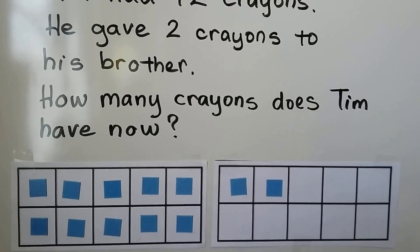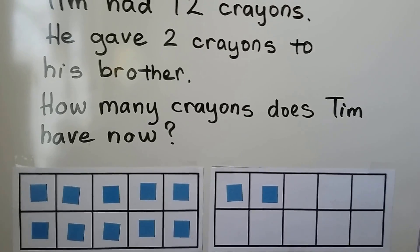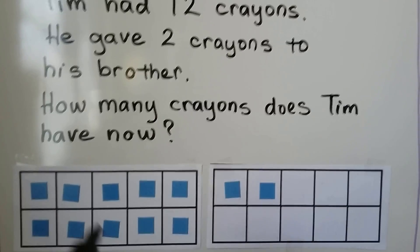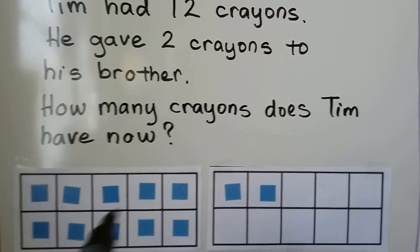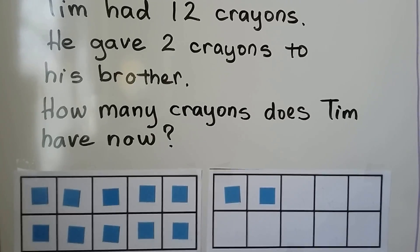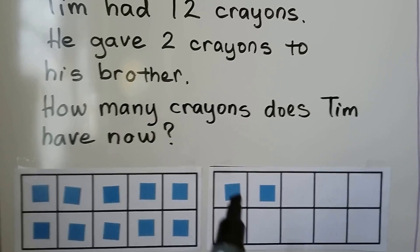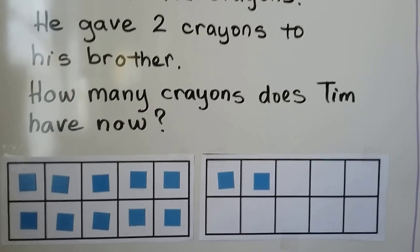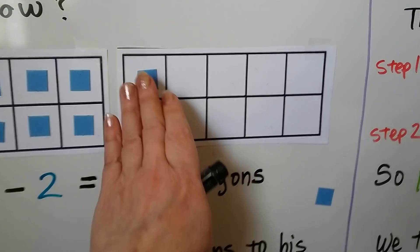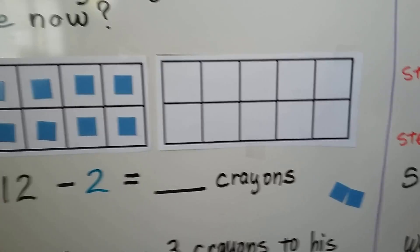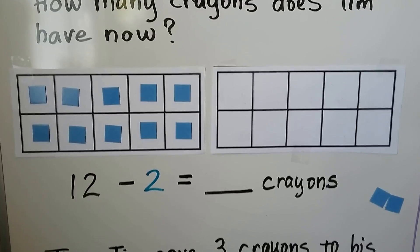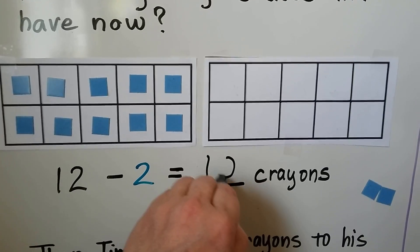We can use 10 frames and we have 10 counters. We have 10, and 2 more is 12. If he gave 2 crayons to his brother, we can take these 2 away. Now we have 1 full 10 frame, so we have 10 crayons left.